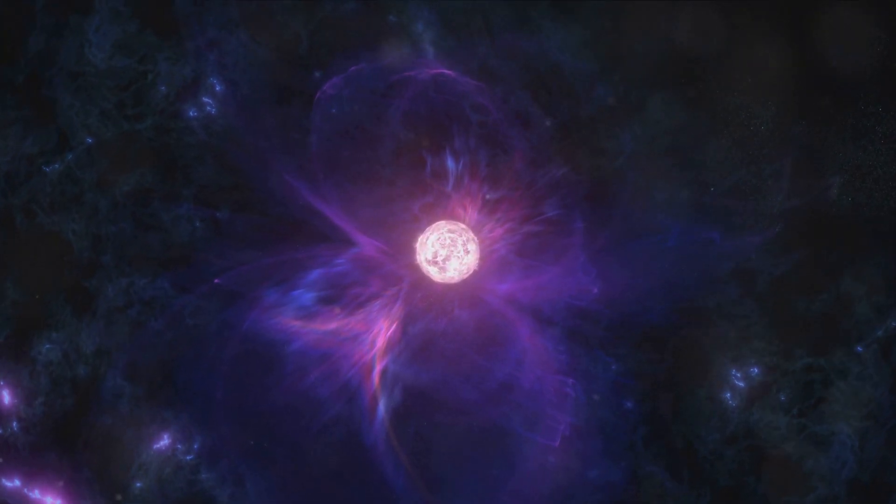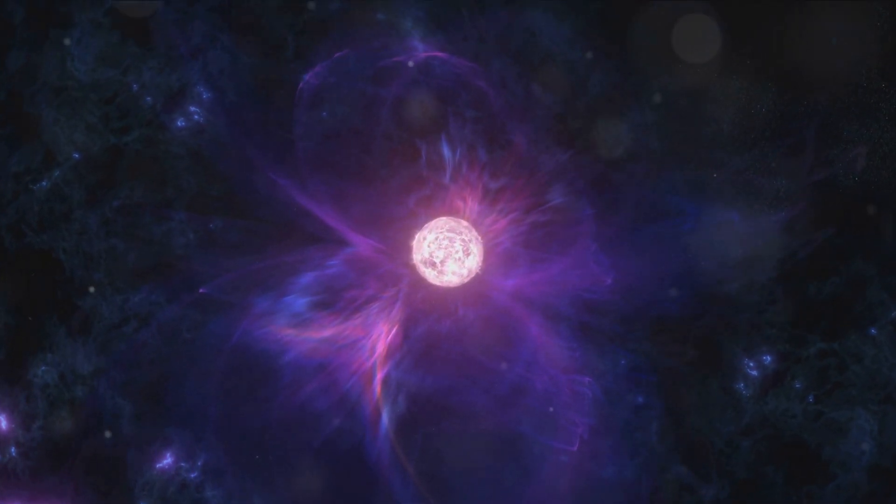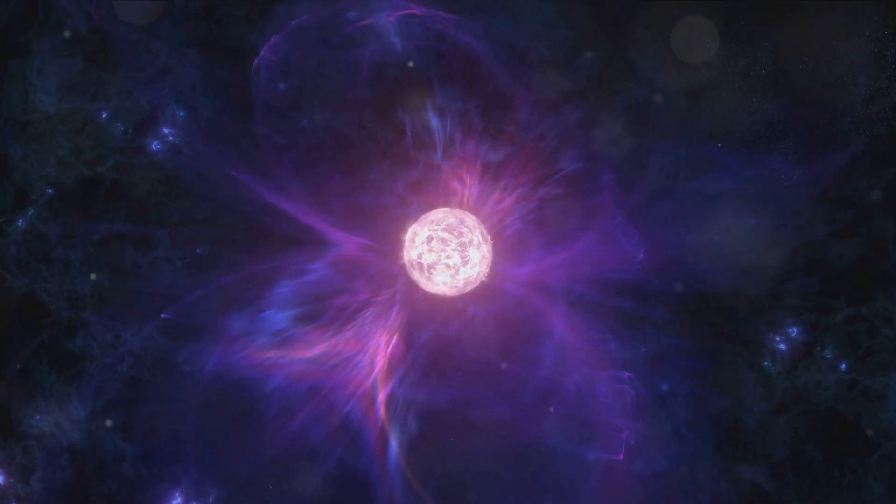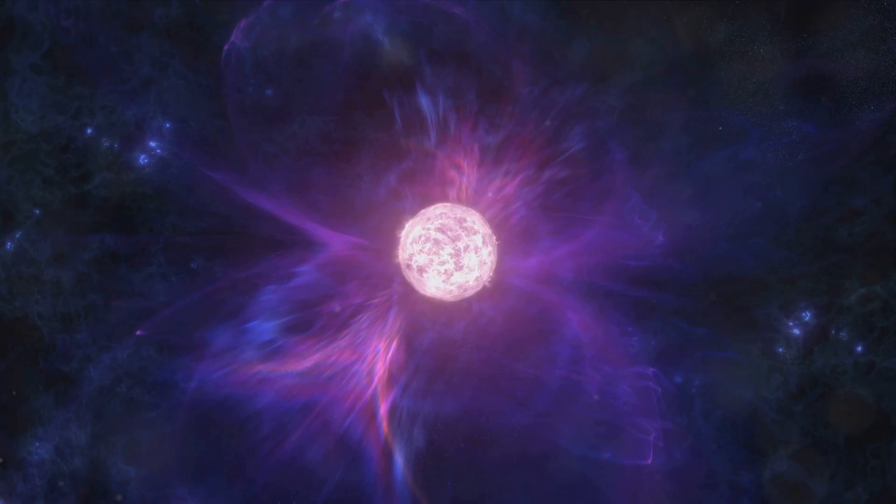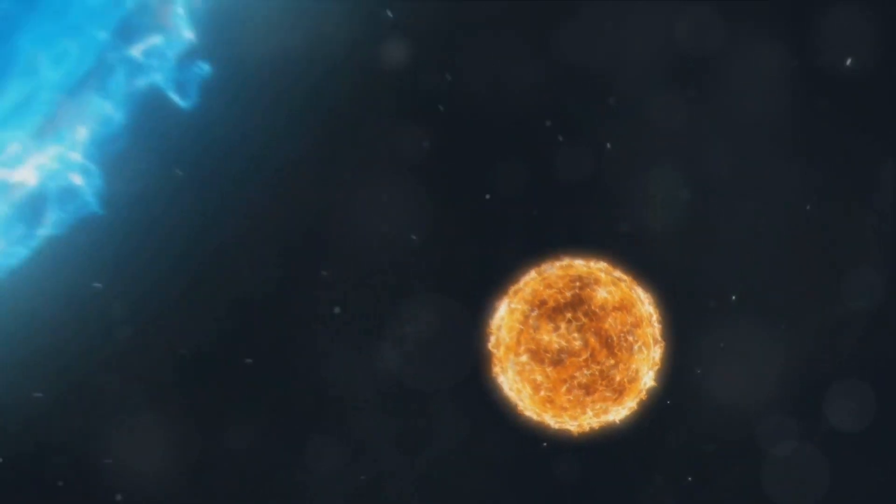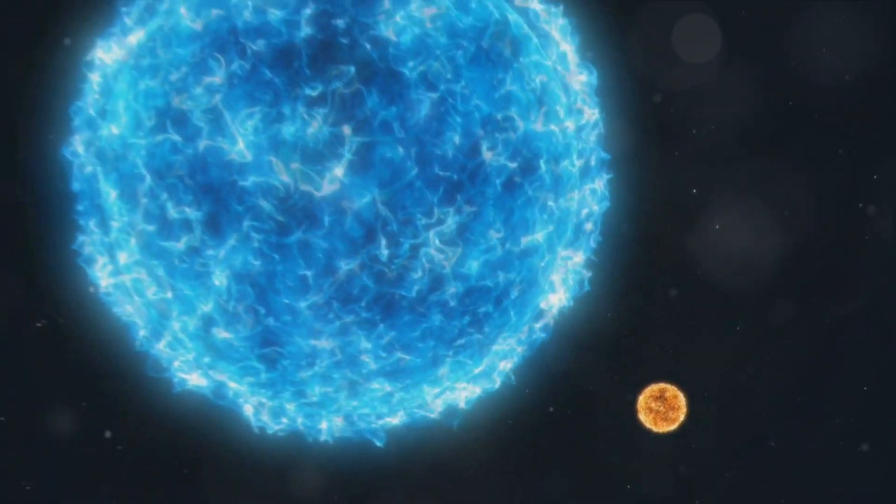Imagine a star about one and a half times the mass of our sun, compressed into a sphere only about 20 kilometers across, that's a neutron star. This intense compression makes neutron stars incredibly dense. In fact, a sugar cube-sized amount of neutron star material would weigh as much as a mountain.